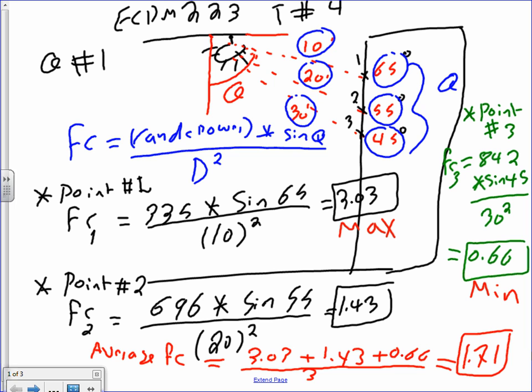The same thing for point 2, the candela power divided by the square of the angle. Point number 3 is here, and then this is the maximum, this is the minimum. The average is add them up, and here's your average.